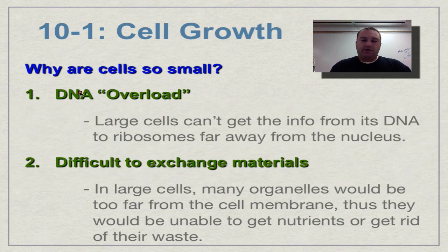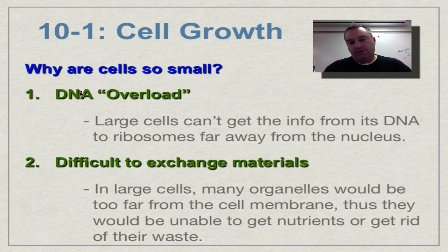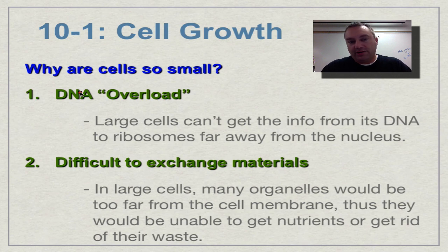The second concept is DNA overload. There's only so much DNA that can be transcribed, and therefore only so much mRNA can be made. As we learned in chapter 13, that mRNA needs to leave the nucleus and go to a ribosome to be translated. If the cell were as big as a baseball, a tiny nucleus couldn't create enough mRNA to supply the enormous number of ribosomes in that cell. A small cell has just the right number of ribosomes to match the RNA transcripts from the nucleus.